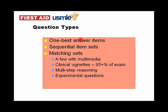In terms of question types, the vast majority are still one best answer items, but there are also some additional types including sequential item sets — those who took the Step 1 in 2009 after the May timeframe should have seen some of those. There are also matching sets, which have been around for many years but were not on the Step 1. A few questions will have multimedia items such as heart sounds or lung sounds that you'll need to interpret.